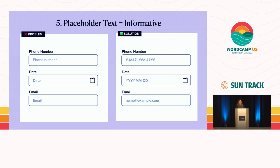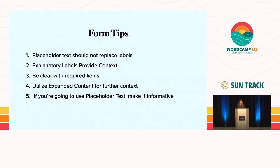Number five: if you're going to use placeholder text, make it informative. Don't let your placeholder text be vague and repetitive. Let the placeholder text help the user by giving context clues about input formatting — instead of just saying 'phone number, phone number, date, date,' use placeholder text that shows what format you want the phone number in or what format you want the date in. Forms recap: placeholder text should not replace labels, explanatory labels provide context, be clear with required fields, utilize expanded content for further context, and make placeholder text informative.